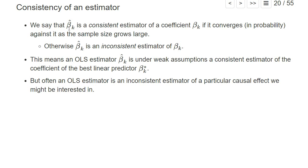We say that an estimator β̂ₖ is a consistent estimator of some coefficient βₖ if it converges in probability against βₖ as the sample size grows large. If we have a large sample, our estimator should be very likely pretty close to this coefficient βₖ. If this does not happen, if β̂ₖ does not converge against βₖ, then we say β̂ₖ is an inconsistent estimator of βₖ.